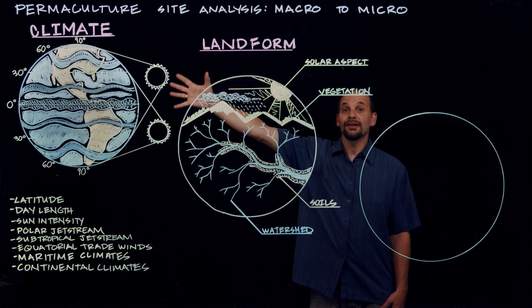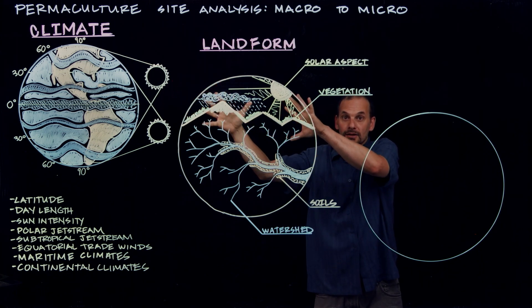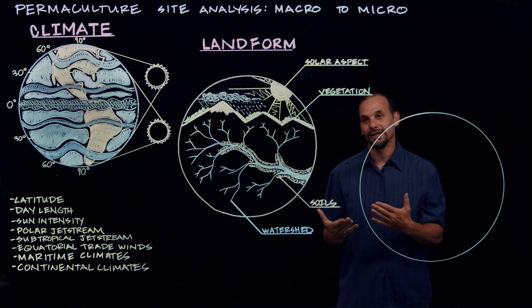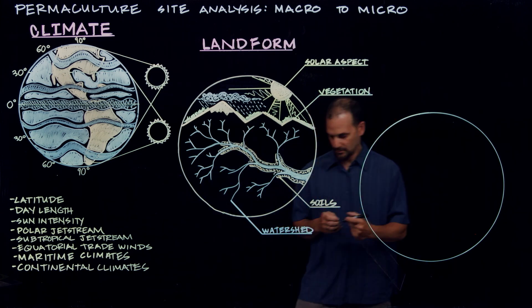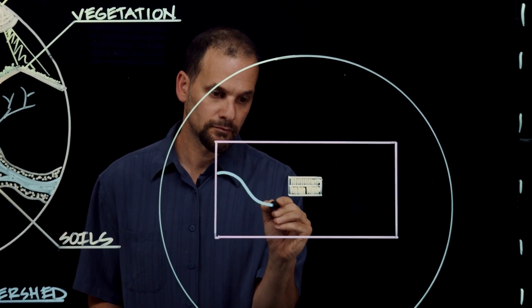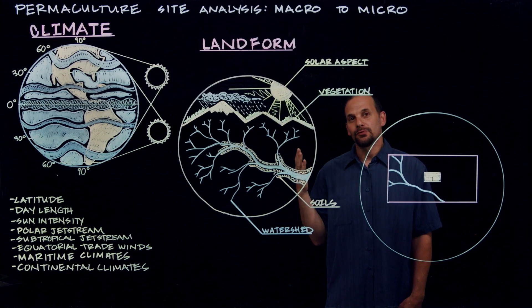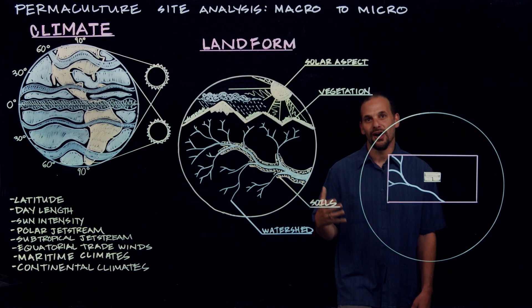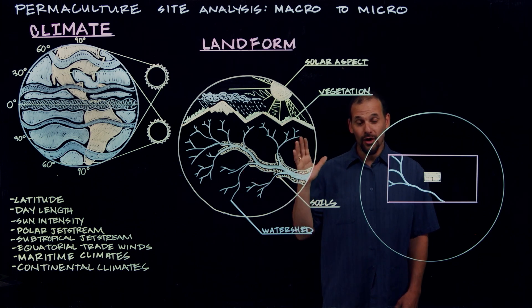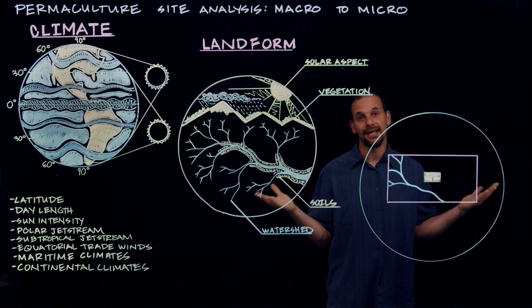We started out in space, right? And then we zoomed in to look at the landform, and now we're finally actually looking at the site itself because we started at the macro scale to understand the big forces that have the most influence. Now we're able to show those forces with a map we call the sector compass.